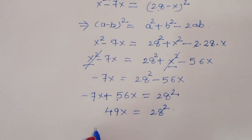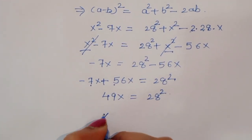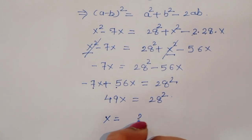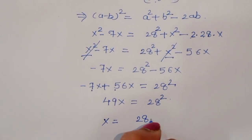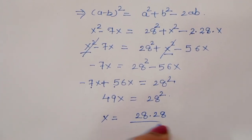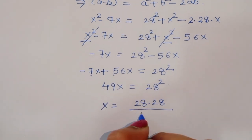Now x is equal to 28 times 28 divided by 49.